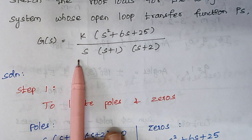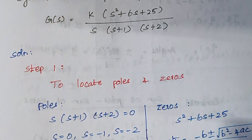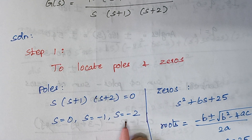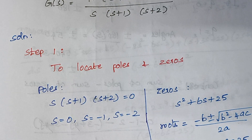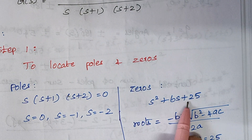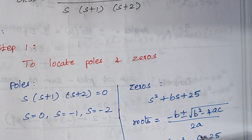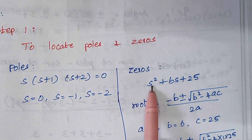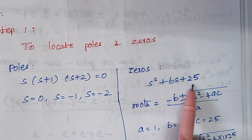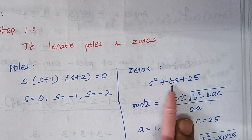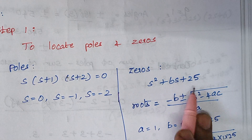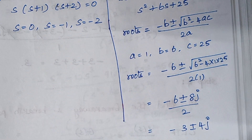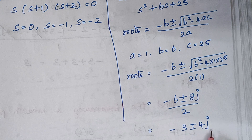First we start with the poles. We have three terms and we have to equate these three terms to zero. The values of poles are found to be 0, minus 1, and minus 2. For the zeros, since it is a quadratic equation we use the formula: minus b plus or minus root of b squared minus 4ac, divided by 2a. From this quadratic equation, a is 1, b is 6, and c is 25. Substituting the values, the zeros are found to be minus 3 plus or minus 4j.